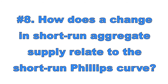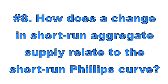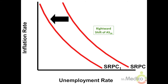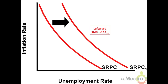Number eight: how does a change in short-run aggregate supply relate to the short-run Phillips curve? When the short-run aggregate supply curve shifts, the short-run Phillips curve also shifts. If short-run aggregate supply shifts right, the short-run Phillips curve shifts left, because inflation and unemployment both decrease. If short-run aggregate supply shifts left, the short-run Phillips curve shifts right, because inflation and unemployment both increase at the same time — that's stagflation.